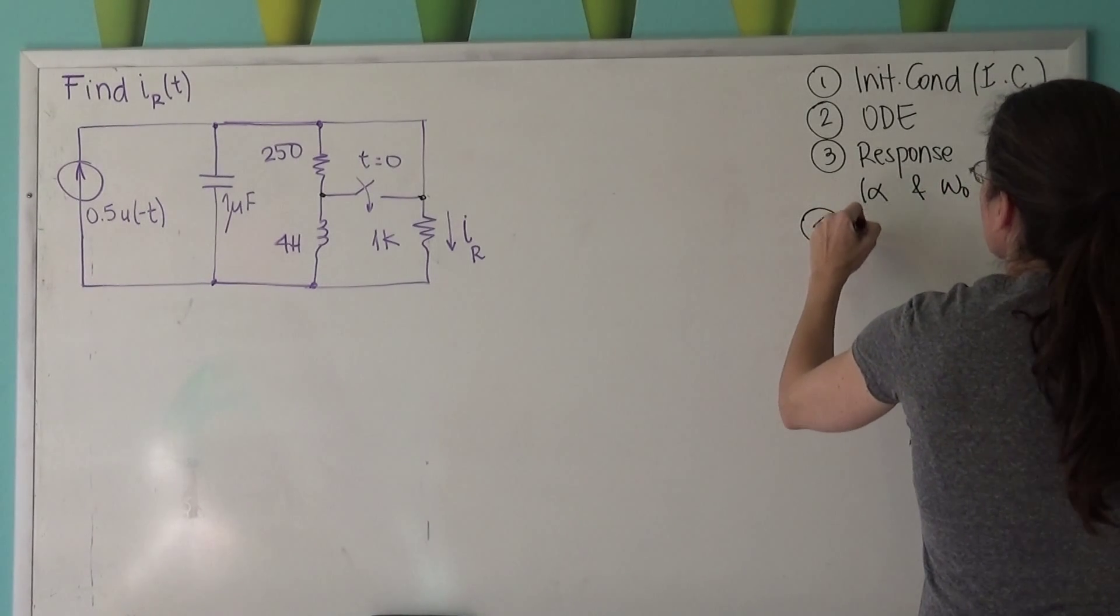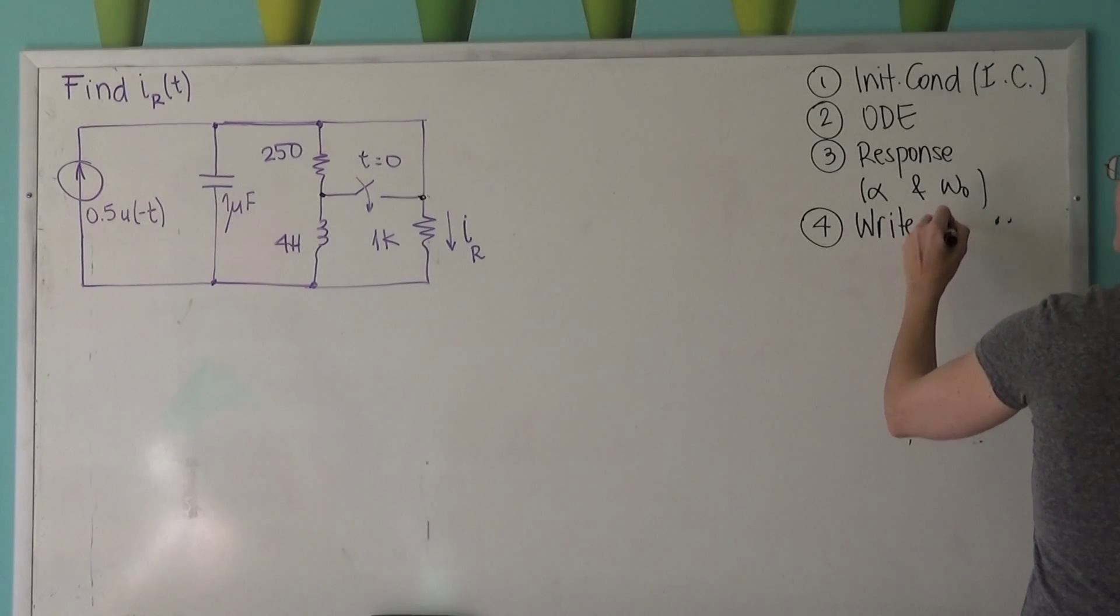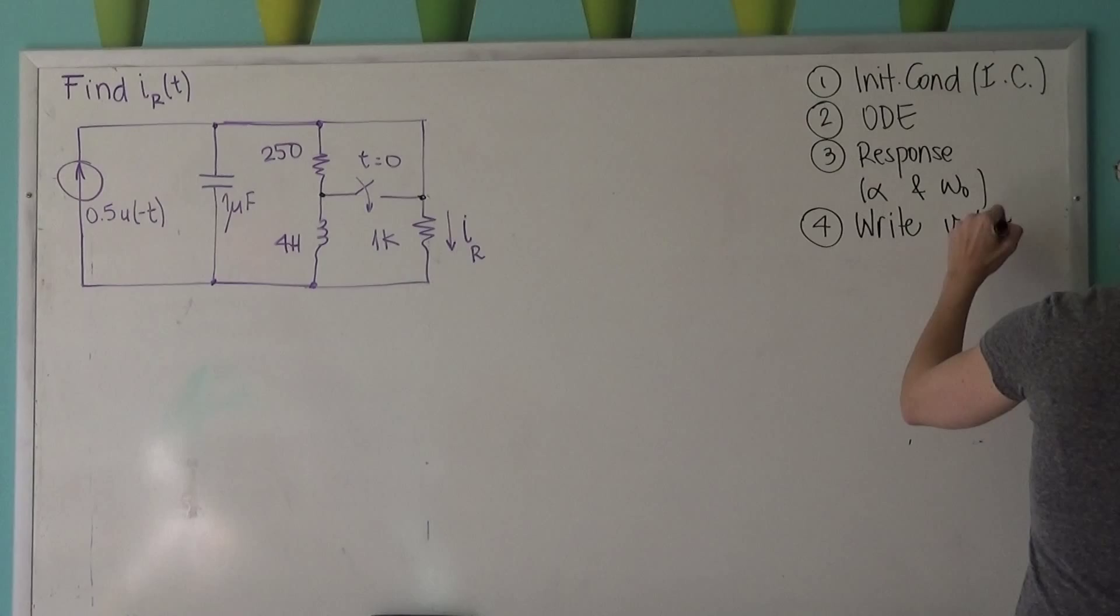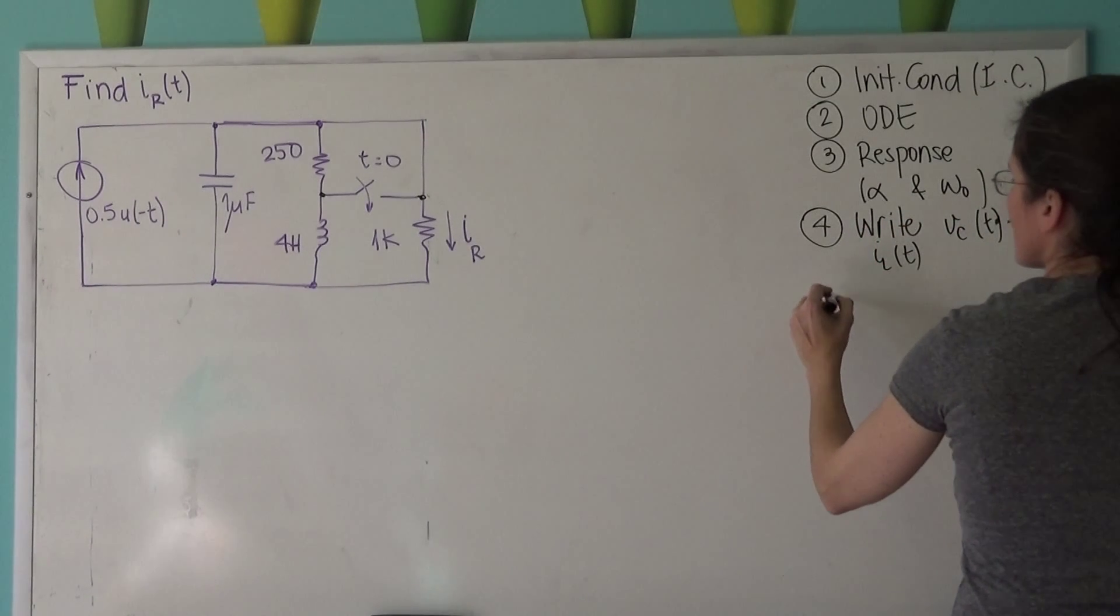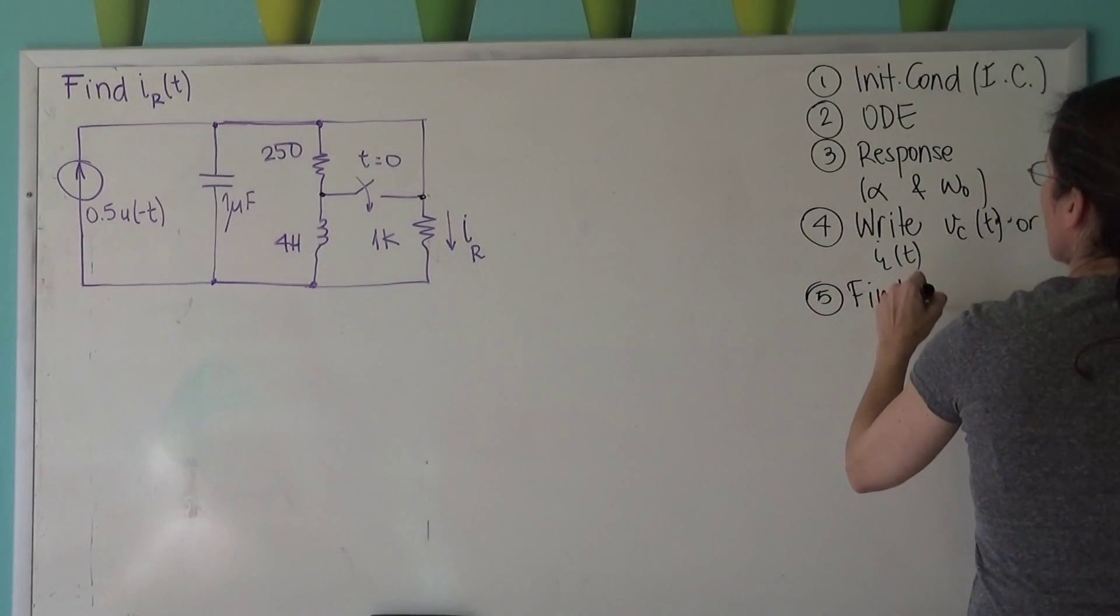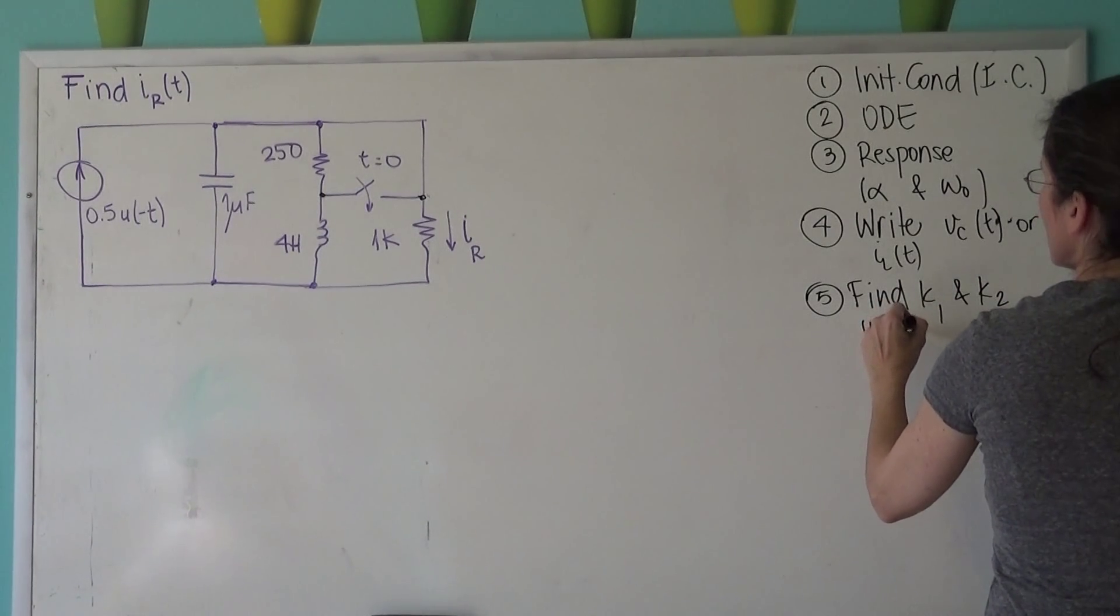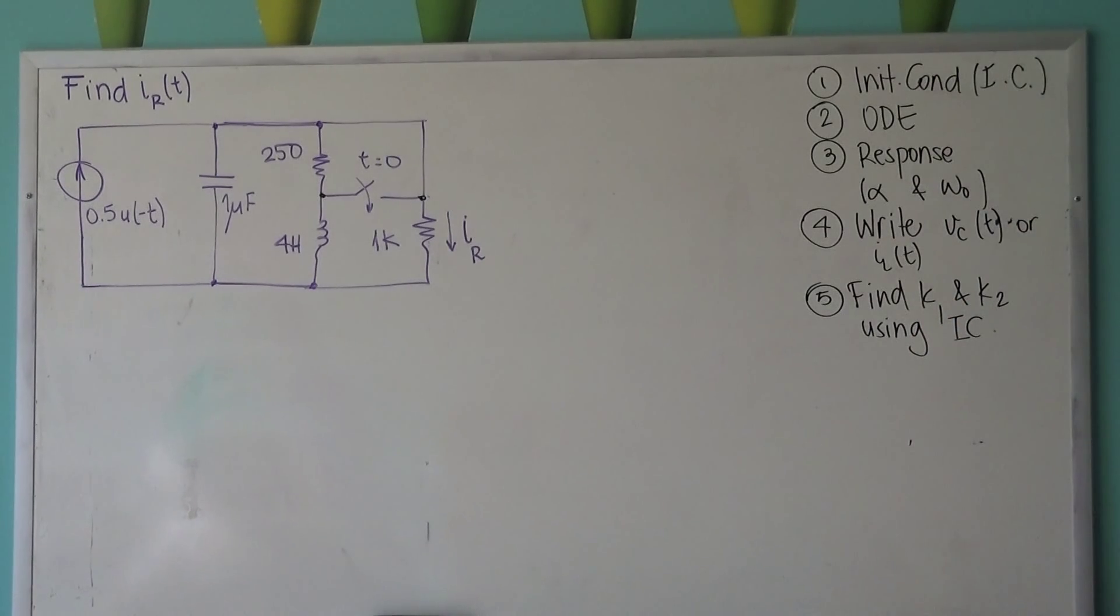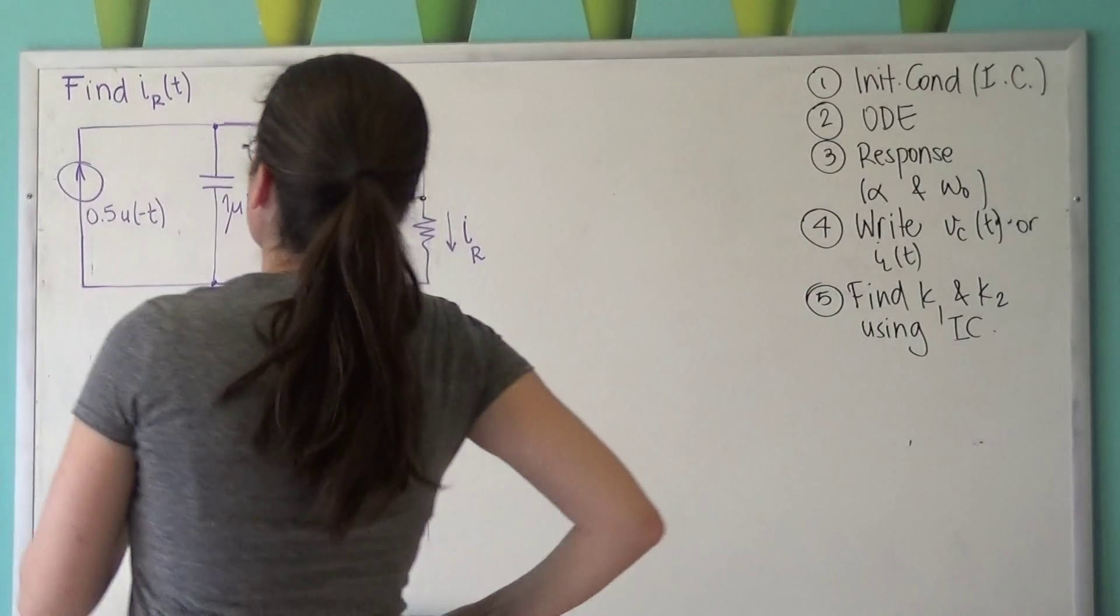So write VC of t or IL of t, following the formula, and finally find k1 and k2 using the initial conditions. So these five steps, I'm going to keep following over and over again. And now we'll go to the initial conditions.